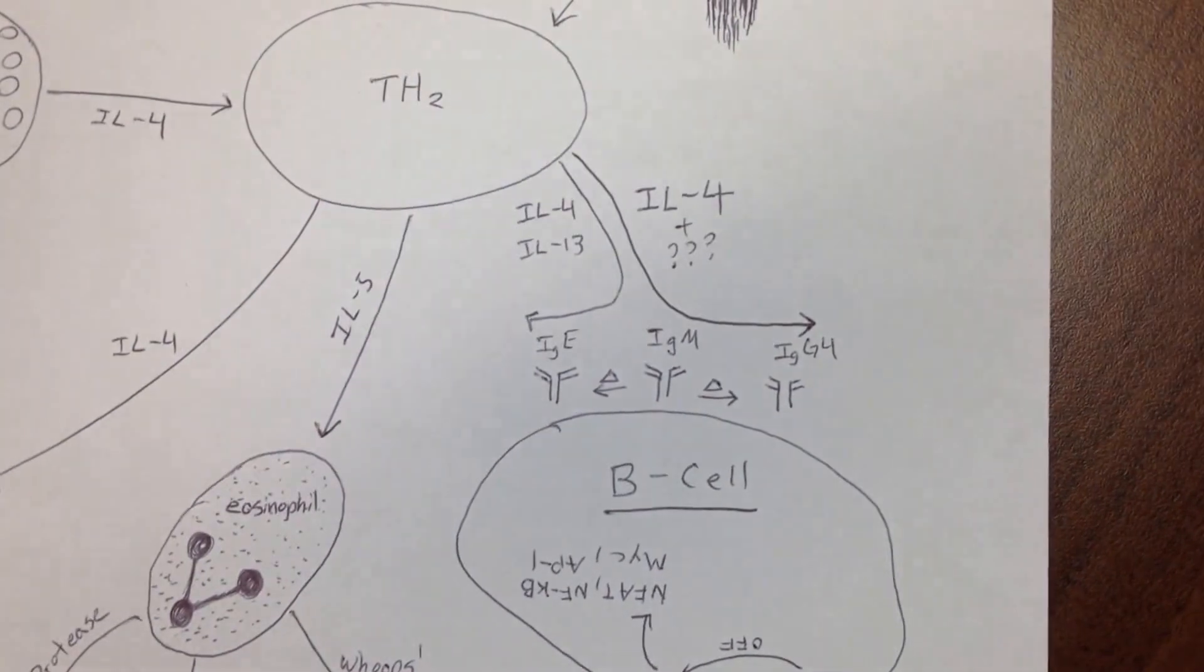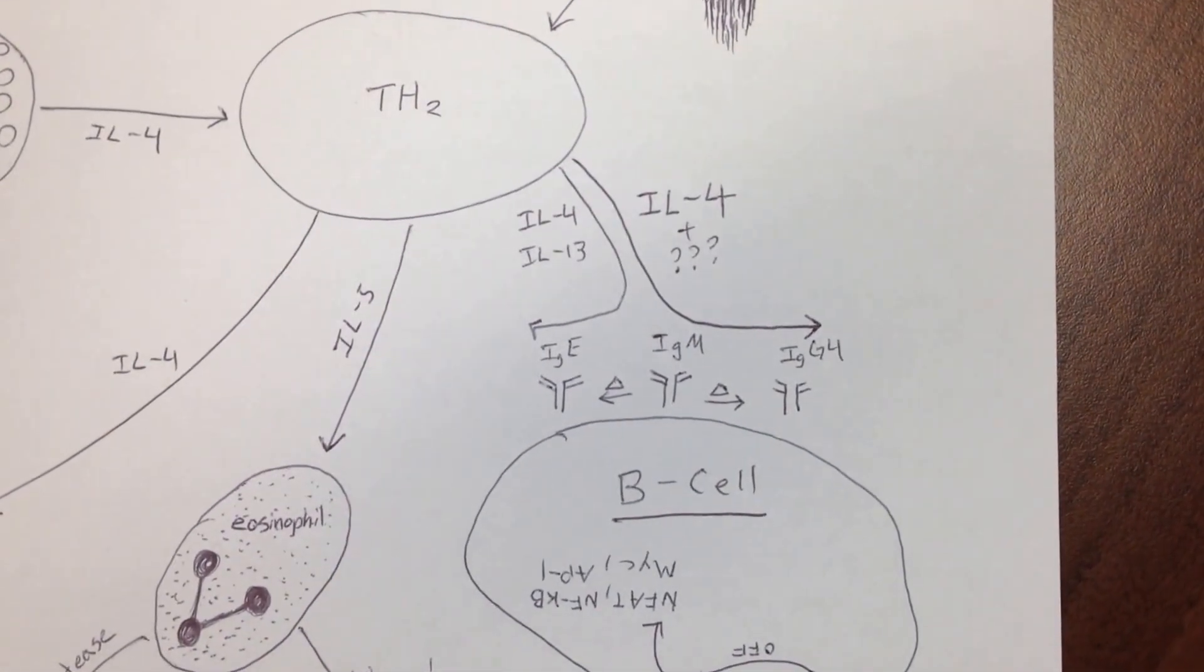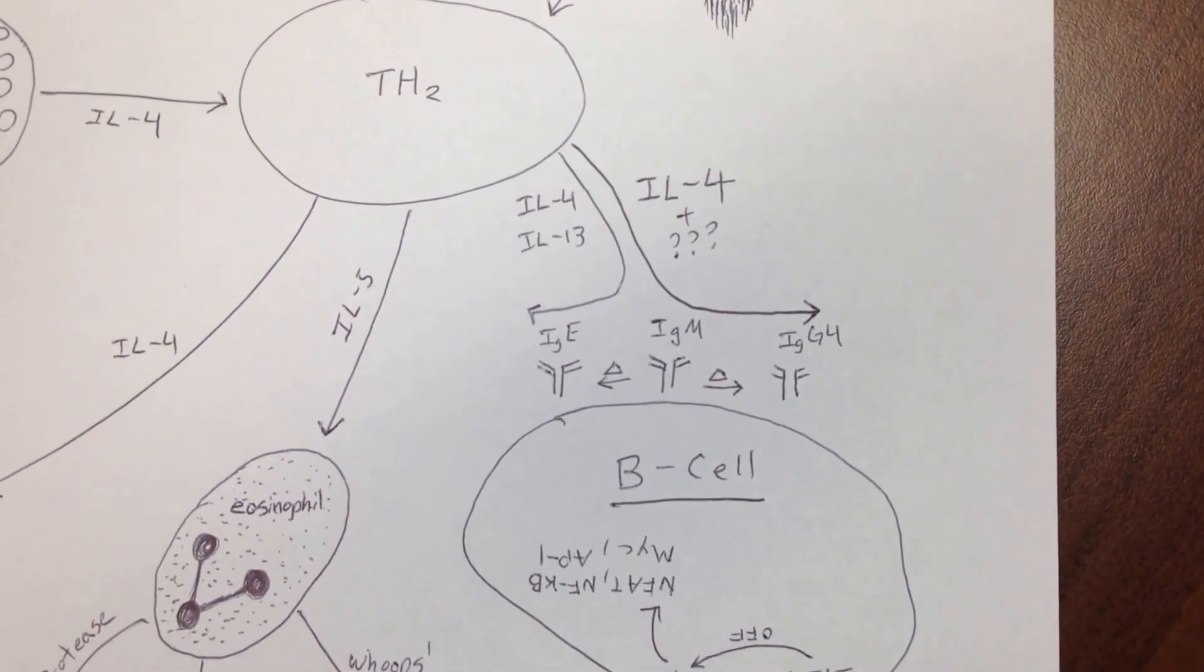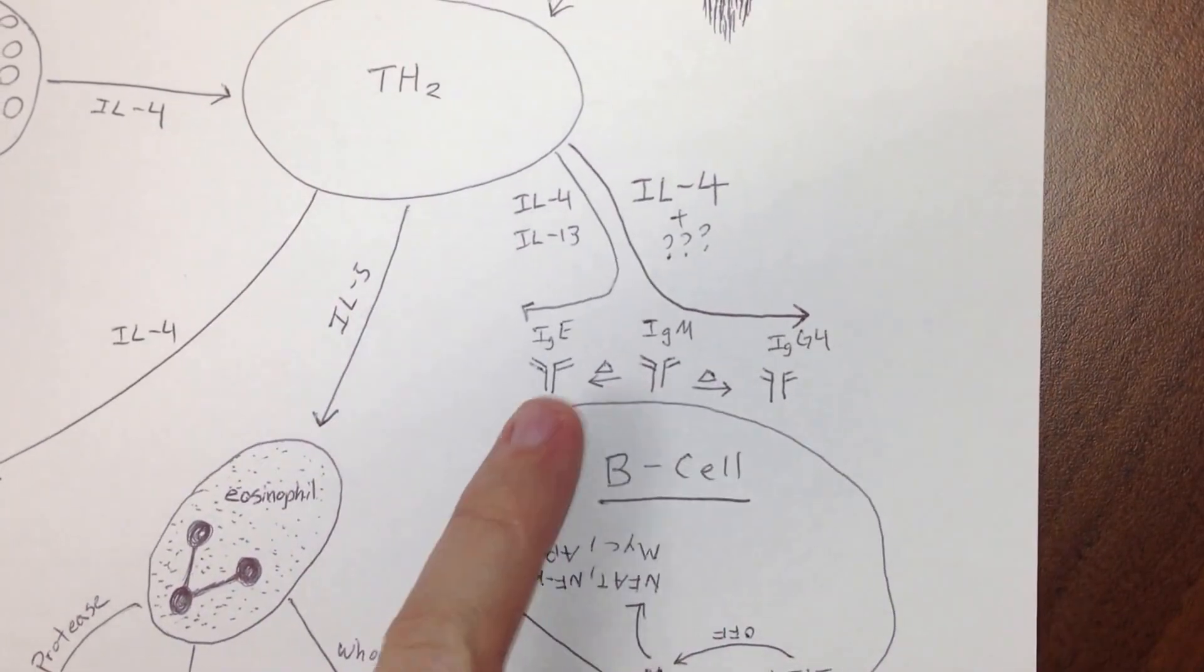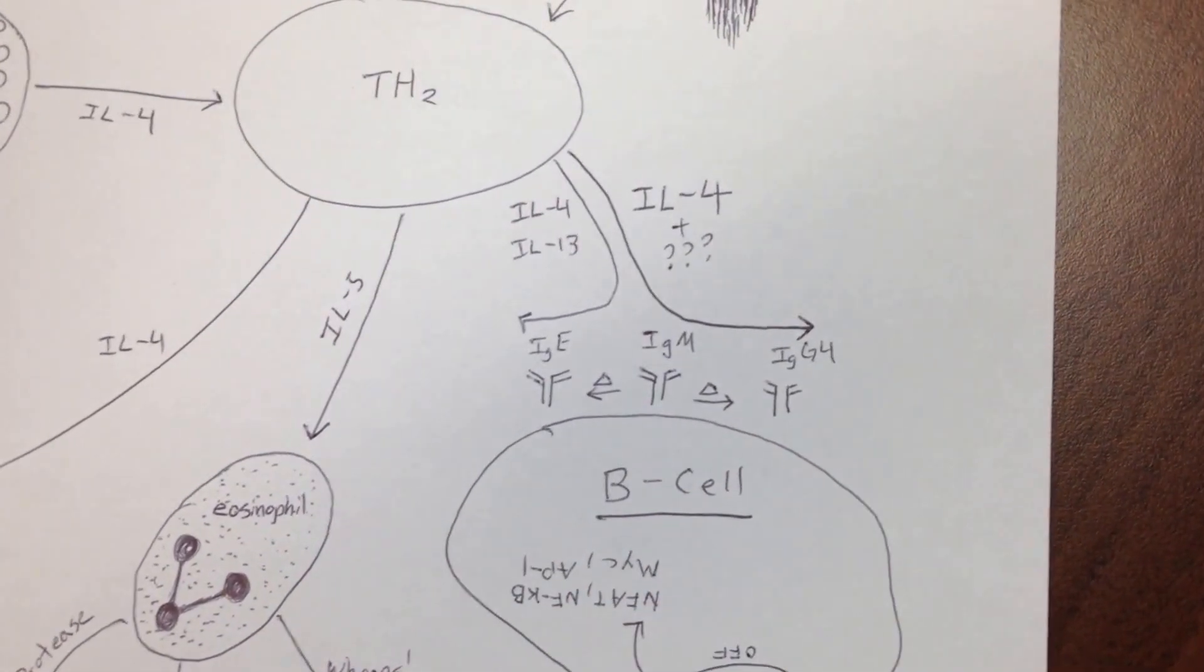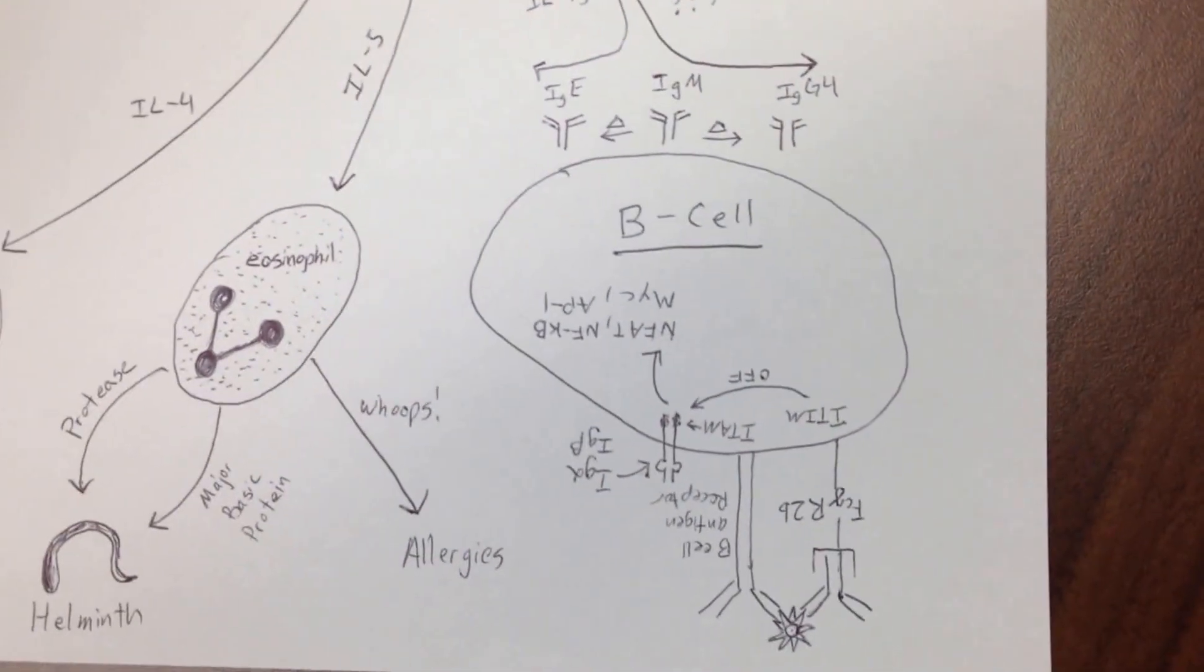Another possibility is for it to secrete IL-4 and something else we don't know, and it will make IgG4. So in general, you can remember that this IL-4 coming off the T helper 2 cell tells B cells to do the heavy chain class switching and change IgM into either IgE or IgG4.